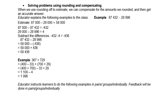Now let's solve problems using rounding and compensation. When we round off to estimate, we can compensate for the amount we rounded to get an accurate answer. For example: 87,432 minus 28,996. We round 28,996 up to 29,000, and then subtract: 87,000 minus 29,000 gives us 58,000.